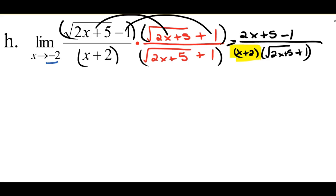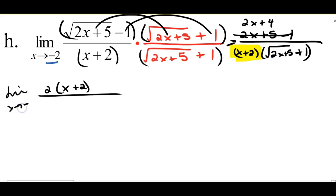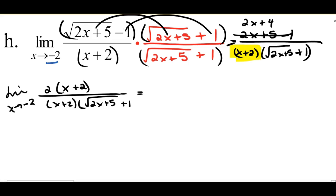Let's simplify the numerator: 2X plus 5 minus 1 is 2X plus 4. I can factor out a common 2, so I have 2 times the quantity X plus 2. This is still the limit as X approaches negative 2, and my denominator is X plus 2 times the quantity radical 2X plus 5 plus 1. Now I have X plus 2's that cancel, meaning I have a point discontinuity at X equals negative 2.